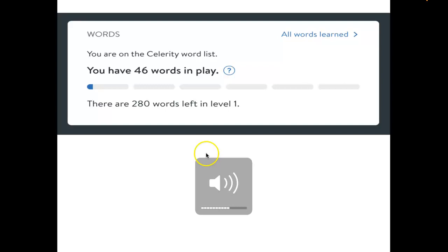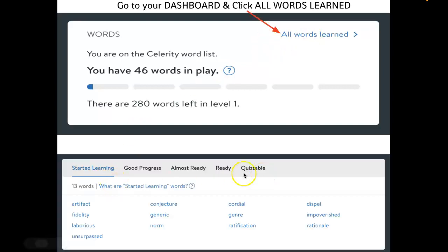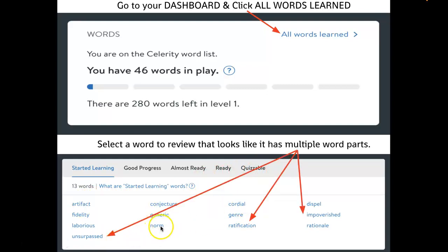So when you go into Membean, you can click where it says all words learned right here, and it'll take you to a page that has a whole bunch of other words. And so you can click here, good progress, almost ready, ready, inquisible. And you could click any one of these words so that you can go and look at the study page.